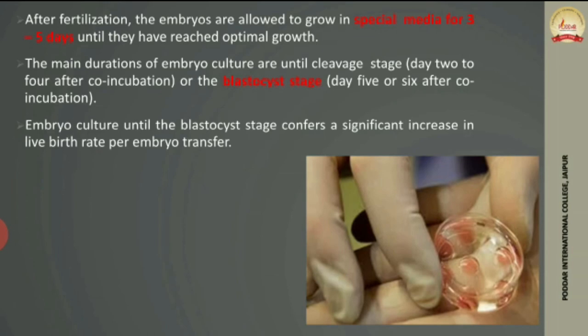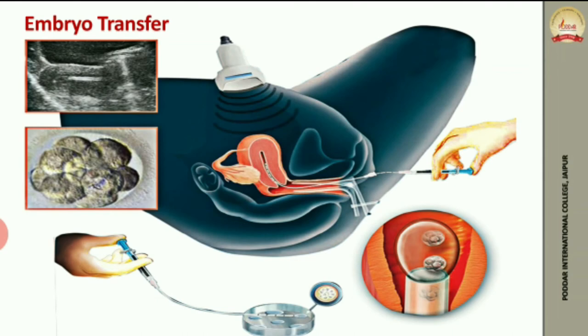The fifth step is embryo culture. The fertilized embryo is cultured in a special medium in the lab for 2 to 4 days. We observe the embryo for 3 to 5 days. By day 5 the embryo reaches the blastocyst stage, which is the preferred stage for transfer because blastocyst transfer increases the live birth rate per embryo transfer. In some cases, both day 3 and day 5 embryos can be used.